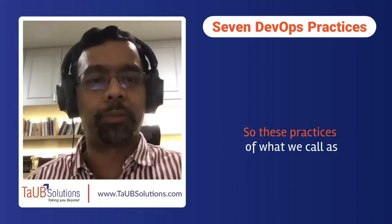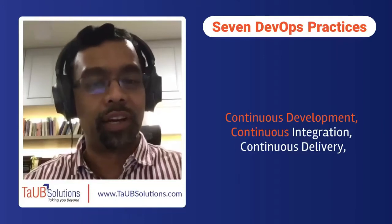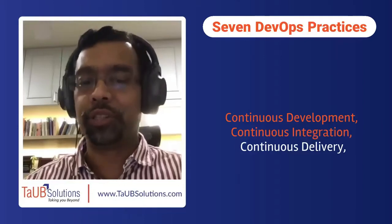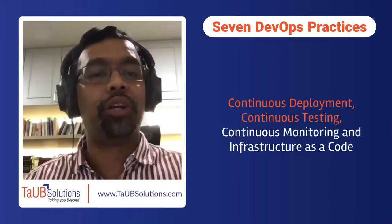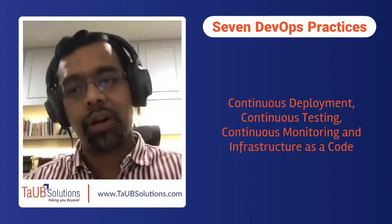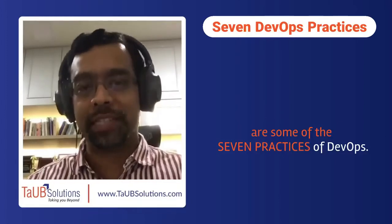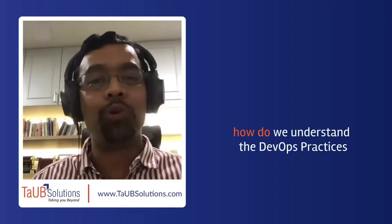So these seven practices — continuous development, continuous integration, continuous delivery, continuous deployment, continuous testing, continuous monitoring, and infrastructure as code — are the seven practices of DevOps. I hope today we learned about how to understand DevOps practices.